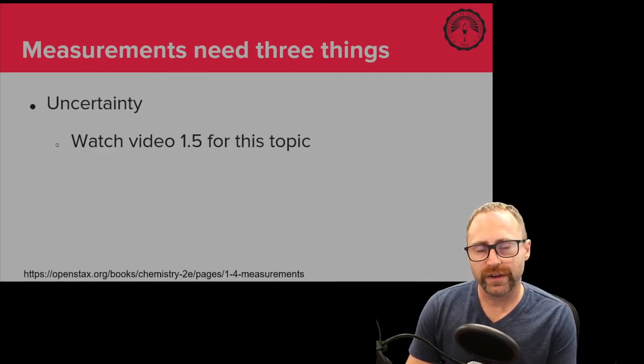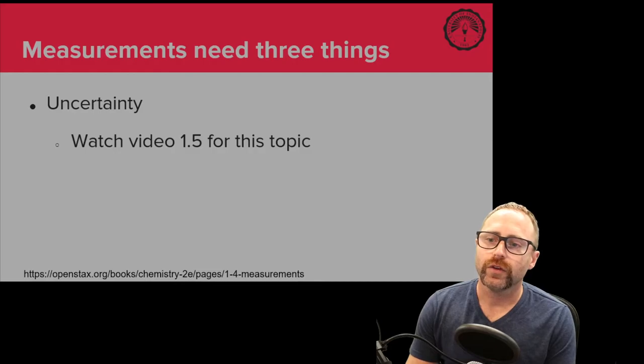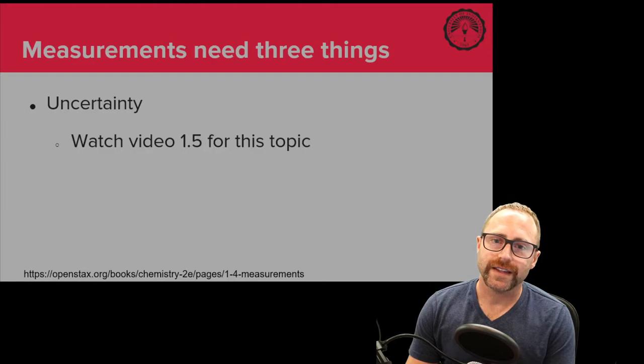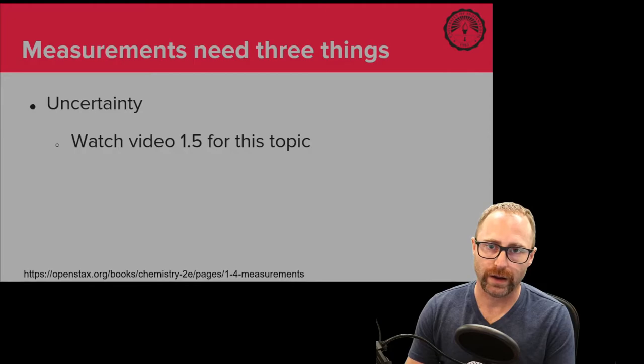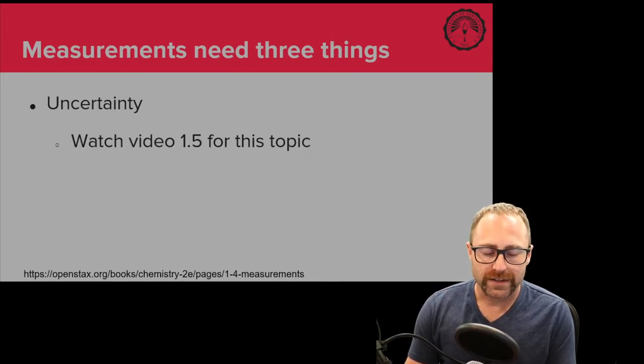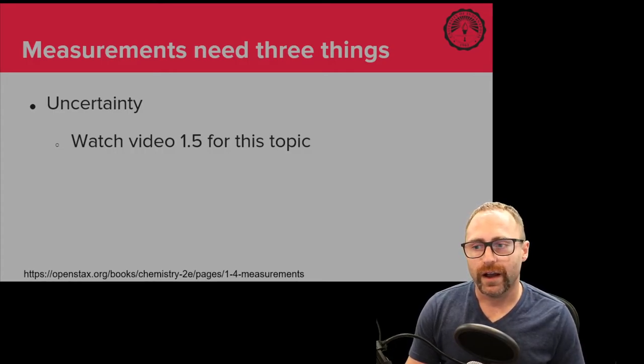So that's two of the three things that we have whenever we're coming up with a measurement. The third thing is uncertainty. Make sure you watch video 1.5 for this topic and you read section 1.5 in your textbook, because uncertainty is this kind of big topic that really needs its own video and its own space to talk about. And it comes down to realistically sig figs, significant figures.